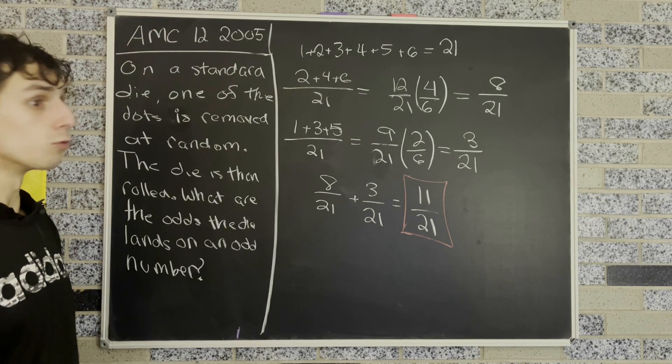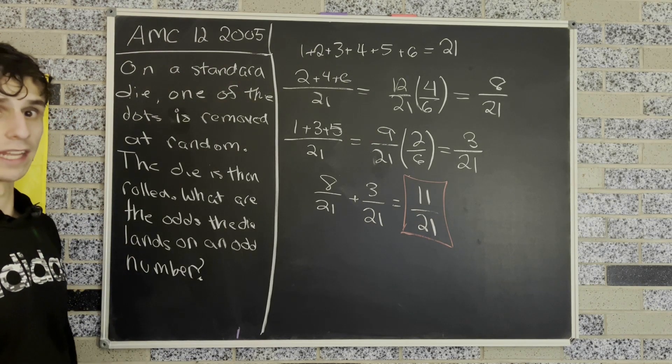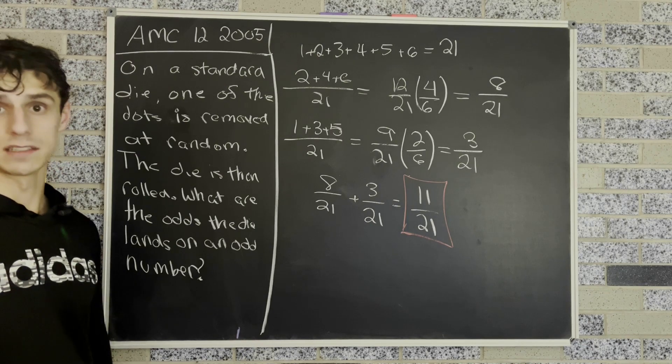And that's the odds that we roll an odd number after we remove one of the dots at random from this die. I think that's enough for now.